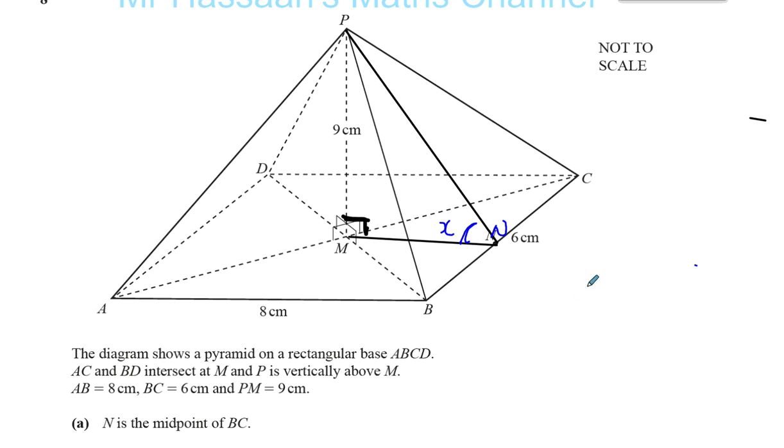So basically, what we see is we have a right angle triangle. Let's do it freehand. P, N, M. That's the right angle.